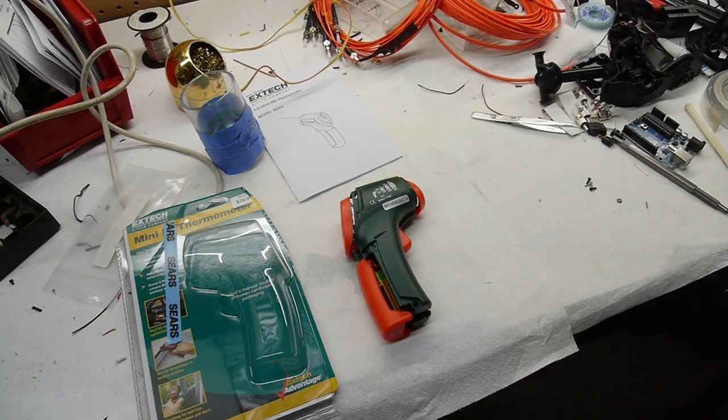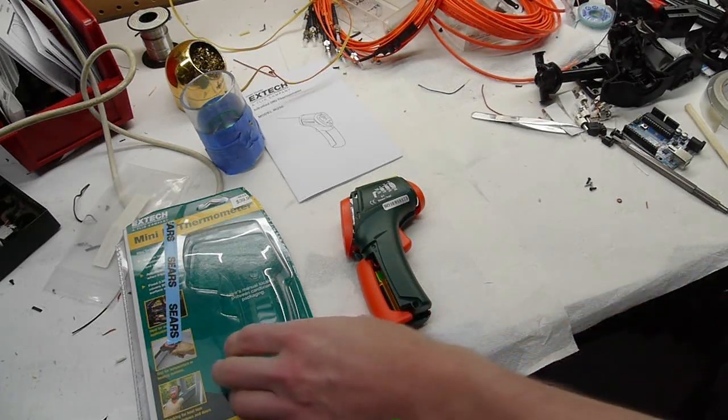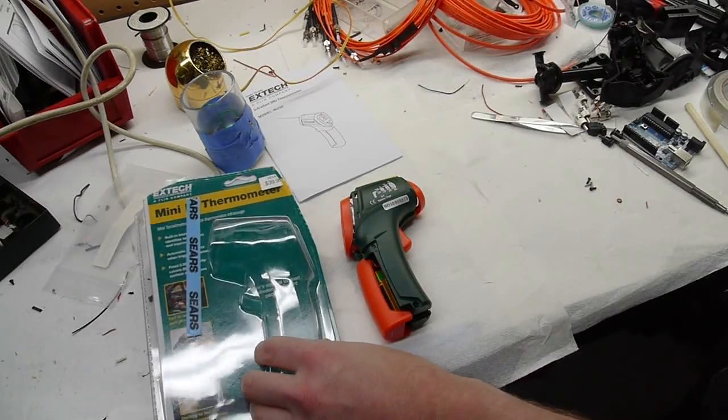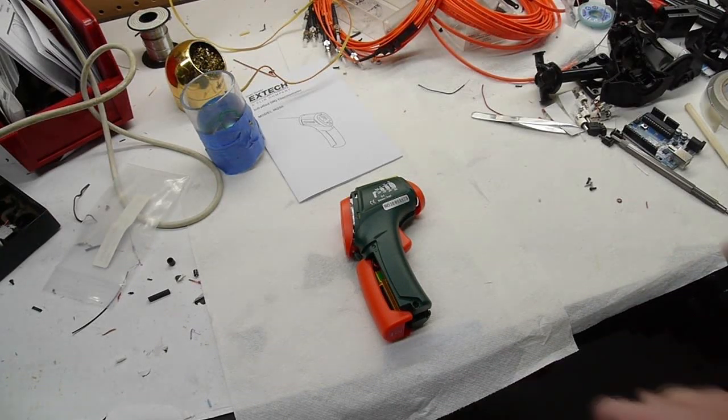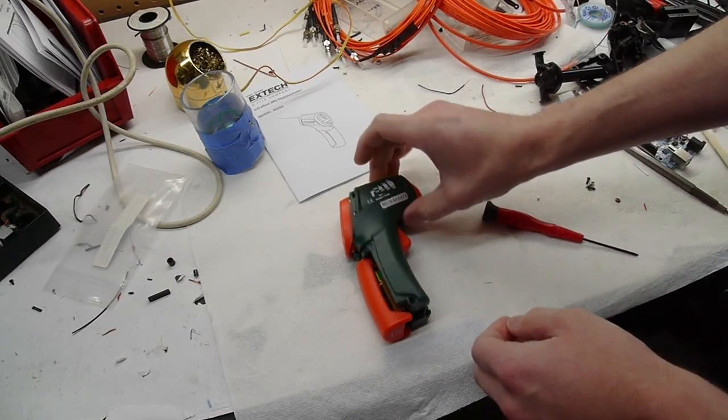Hey everyone. A local Sears store was going out of business and had one of these infrared thermometers marked down to $30. I've been wanting to take one of these apart for a while just to see exactly what kind of sensor they use. So let's hack into this thing.